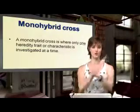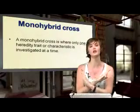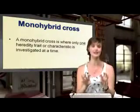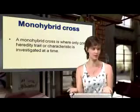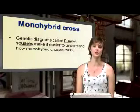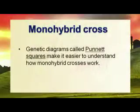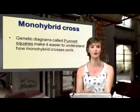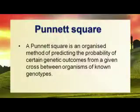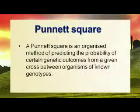Just like we use a cross to multiply, we are going to cross our mom and our dad to see what offspring they may produce. The way we do this is with a genetic diagram called a Punnett square. This makes it much easier to understand how monohybrid crosses work, and it can predict the probability of certain genetic outcomes from a cross between organisms of known genotypes.